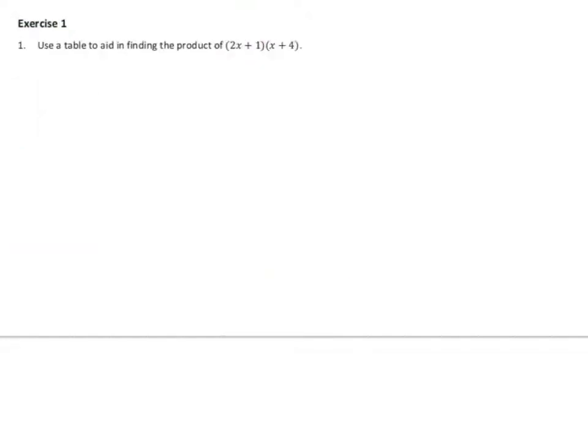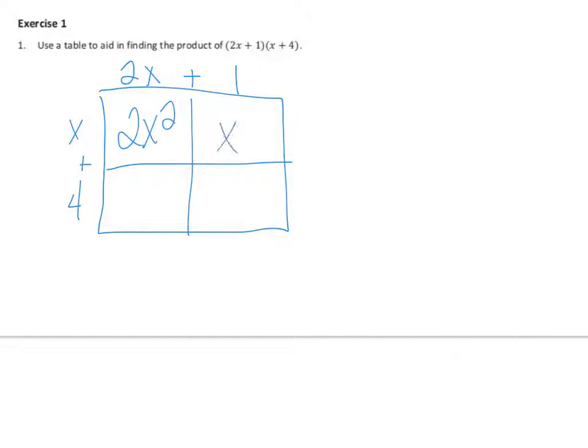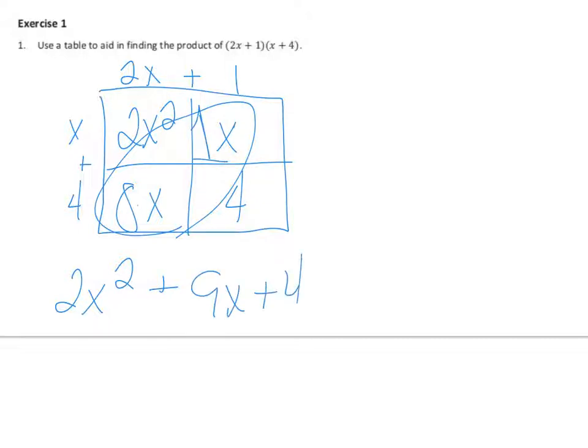So let's try another one. You can use a table to aid in finding the product. Write one across the top and one across the side. Multiply column and row, so I get 2x squared plus x, 8x and 4. Collect like terms, I get 2x squared, 9x plus 4.